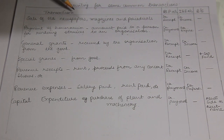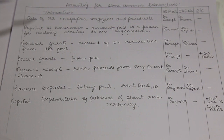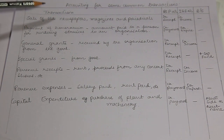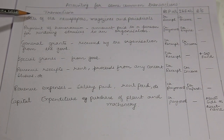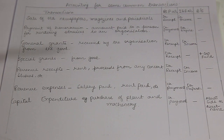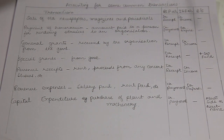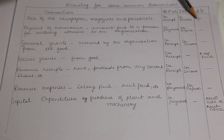Sale of old newspapers, magazines, and periodicals — in case of not-for-profit organizations, old newspapers, magazines, or periodicals are generally not capitalized unless specifically given in the question. So whatever is received from selling old newspapers, magazines, and periodicals, that entire amount will be debited in the receipts and payments account as receipt. And since nothing was capitalized, it will be credited in the income and expenditure account as income. Nothing will appear or change in the balance sheet since these were never on the asset side.